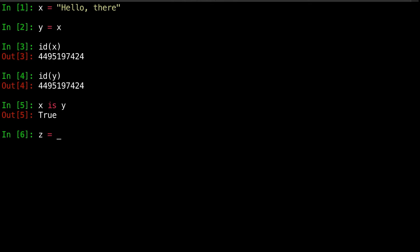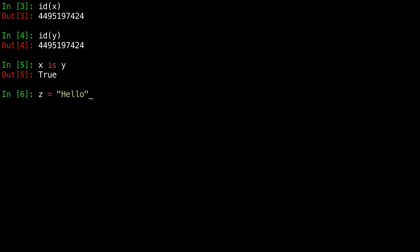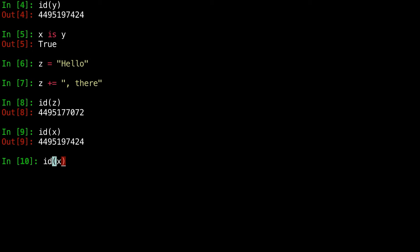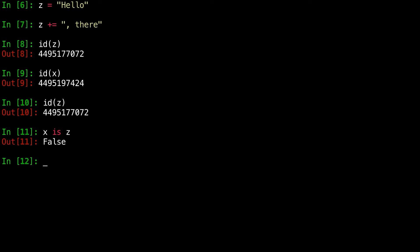If we separately make an object under z that will start with hello and then change to have a new value, hello there, now z is a different object. Id of x is the same as it was before. Id of z is a different object. So if we ask whether x is the exact same as z, it is false.